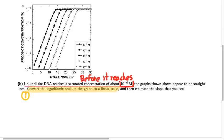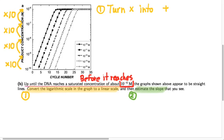It's a two-step process. First, convert the logarithmic scale on the vertical axis into a linear scale, because we can't really make sense of a slope until we have a linear scale on both axes. Once we have a linear scale on both axes, then we can estimate the slope using familiar techniques.